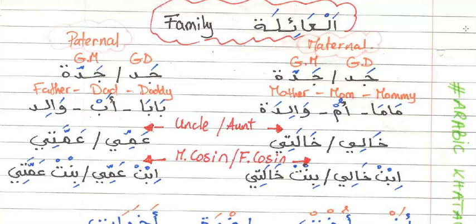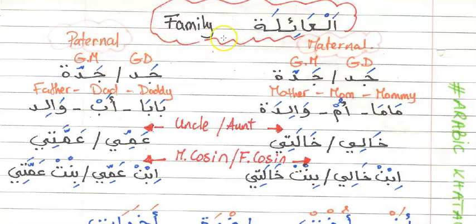Here we are going to review the family — al-a'ila. In al-a'ila there are two categories: family members related to the mom, or the maternal side, and then there is a set of references to family members related to the father's side, the paternal category.